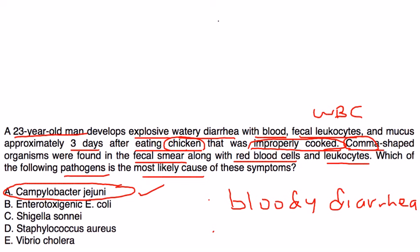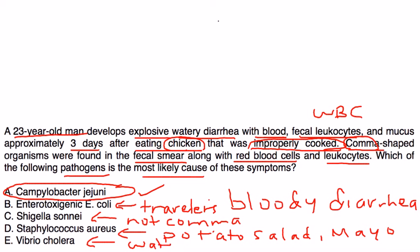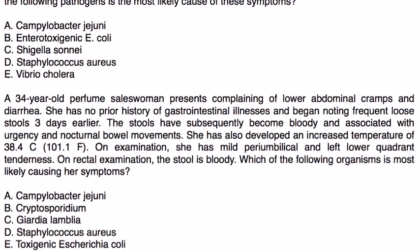Let's go through the other answer choices. E. coli is a traveler's diarrhea, and the vignette would be presented differently. Shigella is not comma-shaped. Staph aureus also causes diarrhea, but the associated foods in a vignette would be potato salad or mayonnaise. Vibrio causes watery diarrhea — there would not be any blood. So C. jejuni is the correct answer.